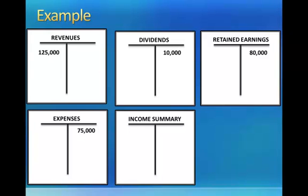The retained earnings account is an equity account that we've studied in a previous module. The balance in the retained earnings account at the start of the closing process is the ending balance from the previous period. Retained earnings is only used during the closing entry process. So again, revenues and expenses get closed to income summary, and dividends and income summary get closed to retained earnings.